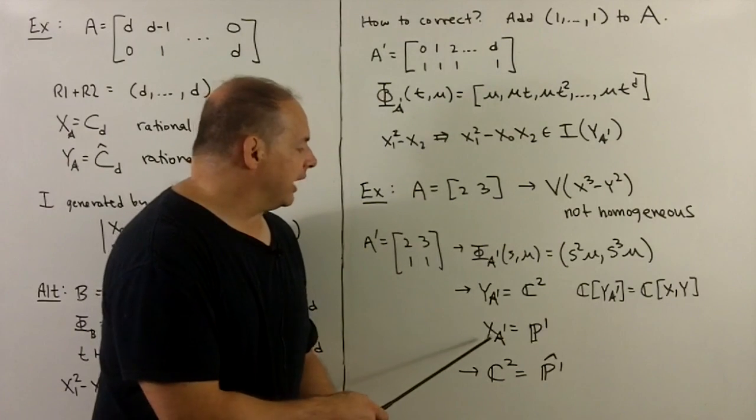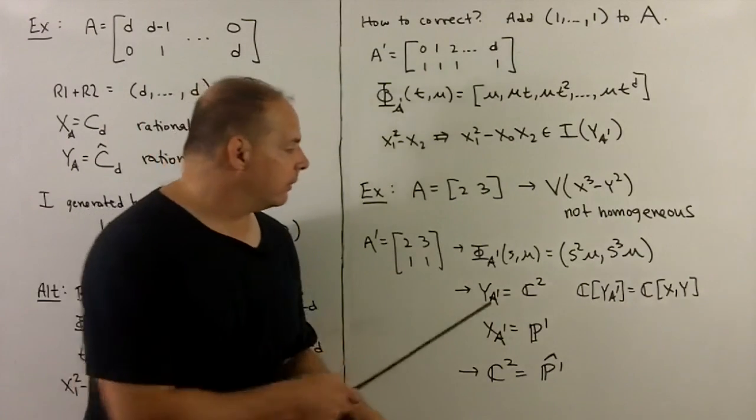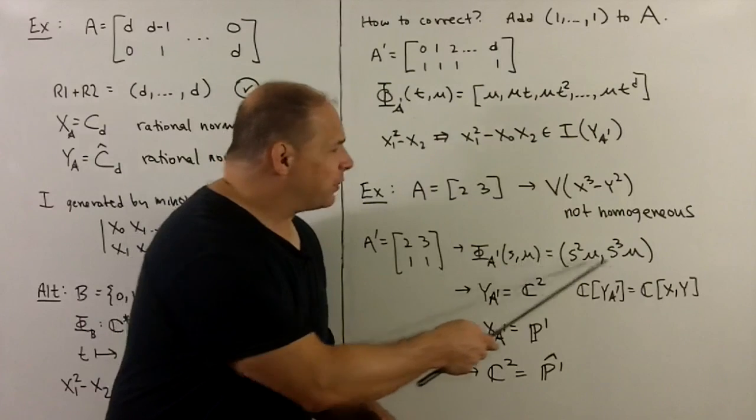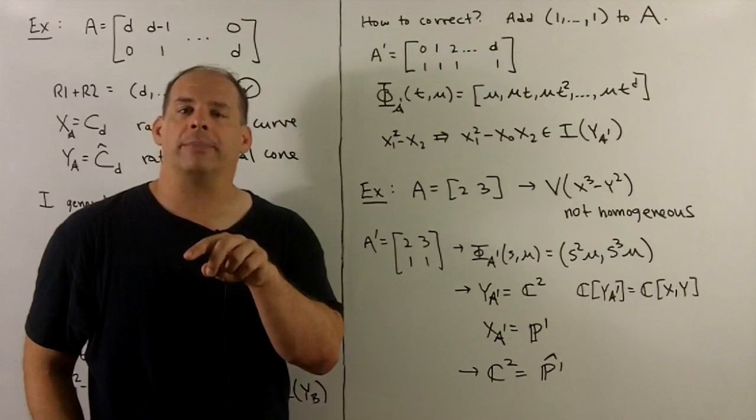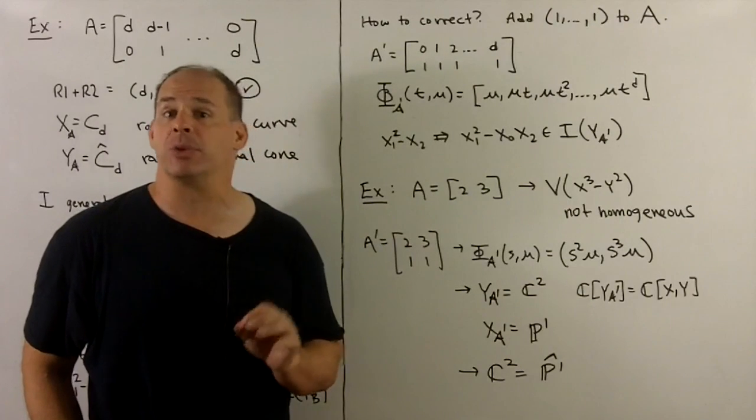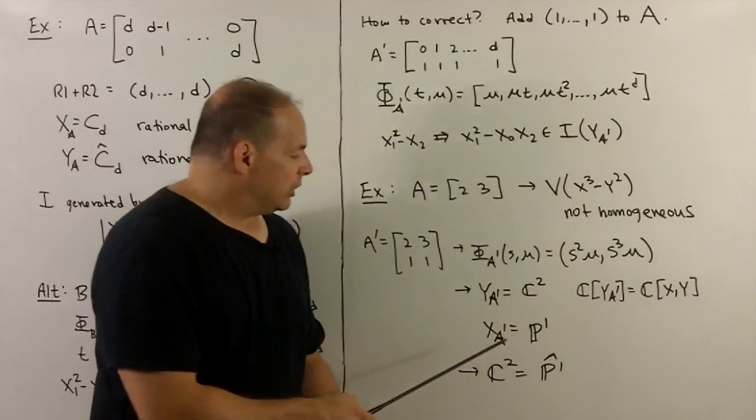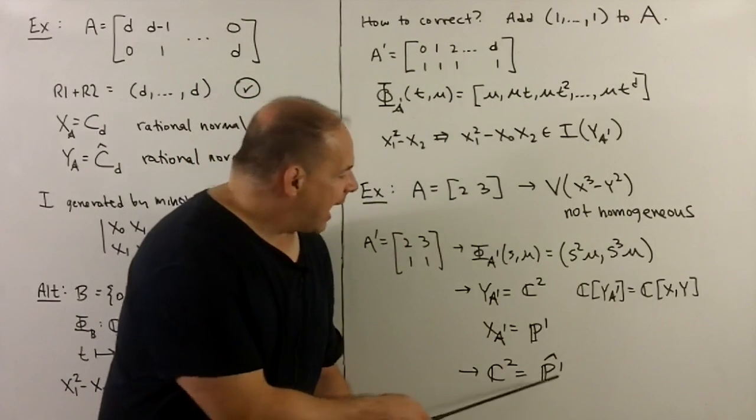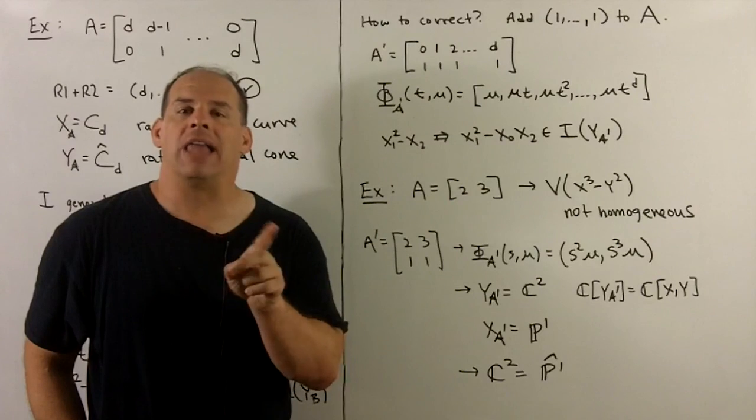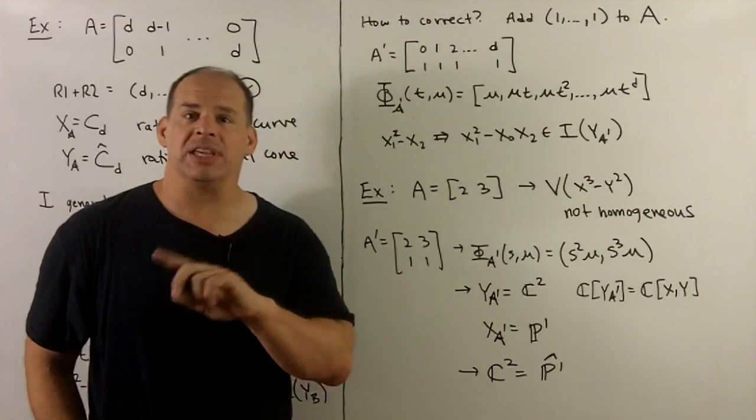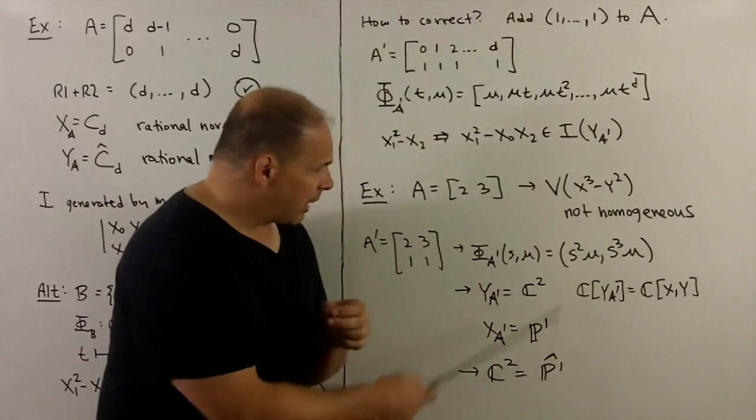We can also see x sub A prime is just going to be projective line, so P1. One way to see that is to note we can divide through in here by s squared mu, which is going to give us a 1 in the first coordinate, free variable in the second. And we've already seen that correspondence with the projective line. Finally, we just note that if I'm going to take the cone over the projective line, we're just going to take all lines through the origin in C2, take their union, which gives us all C2. And that holds by what we have here.